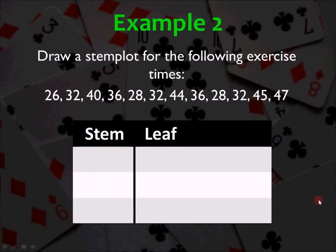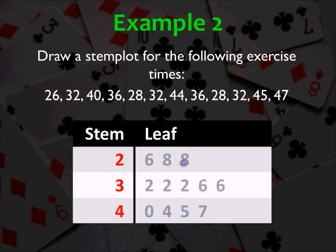Example two, draw a stem plot for the following exercise time. So what I'm going to have you do is pause the video and do this by yourself, resuming the video when you're ready to go. So the possible stem values are 2, 3, and 4. And what you have to do is put the leaves in numerical order. So for the leaf of the 20s, there's a 26, a 28, and another 28. For the 30s, there are three 32s and two 36s. And for the 40s, there's a 40, a 44, a 45, and a 47. Notice again, each leaf takes on one of the values in the data set.